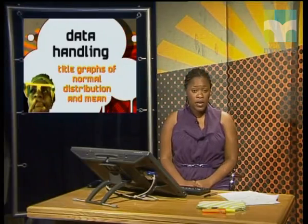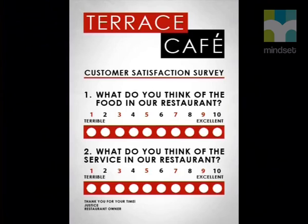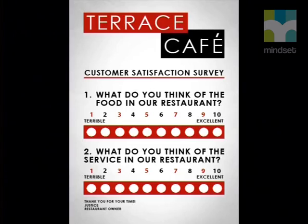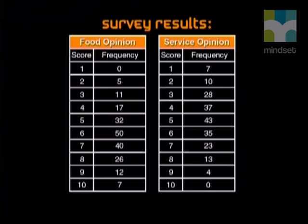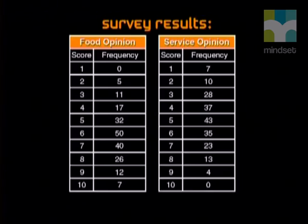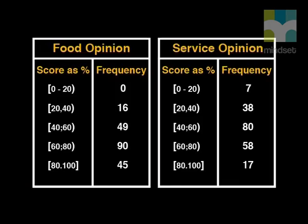Graphs are used for various types of information, so we need to select the type of graph that will best show the data we have. In the last lesson, we conducted a survey in Justice's restaurant to identify what people think of his restaurant. The survey asked: one, what do you think of the food in our restaurant? And two, what do you think of the service in our restaurant? Remember that the data we collected from the survey is discrete, and so is not useful for graphing as grouped data.